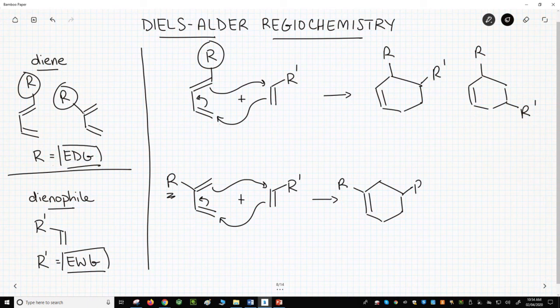The mechanism shown would give this particular regioisomer. And if we flipped over the dienophile, excuse me, we could get that particular regioisomer.